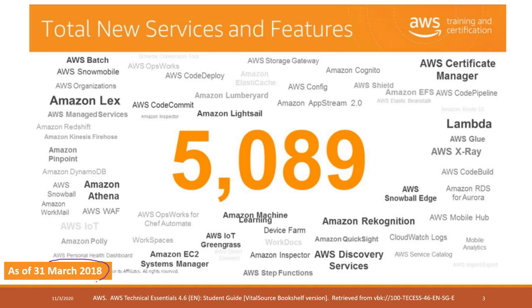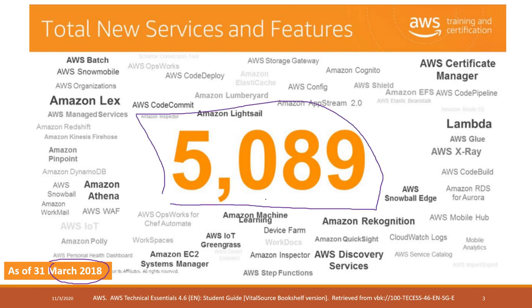As of March 2018, the total number of AWS services was more than 5,000, and that number is even larger now. There are thousands of services, and I don't think any single person in the world knows all of them. We are going to talk about the ones most relevant to this class.